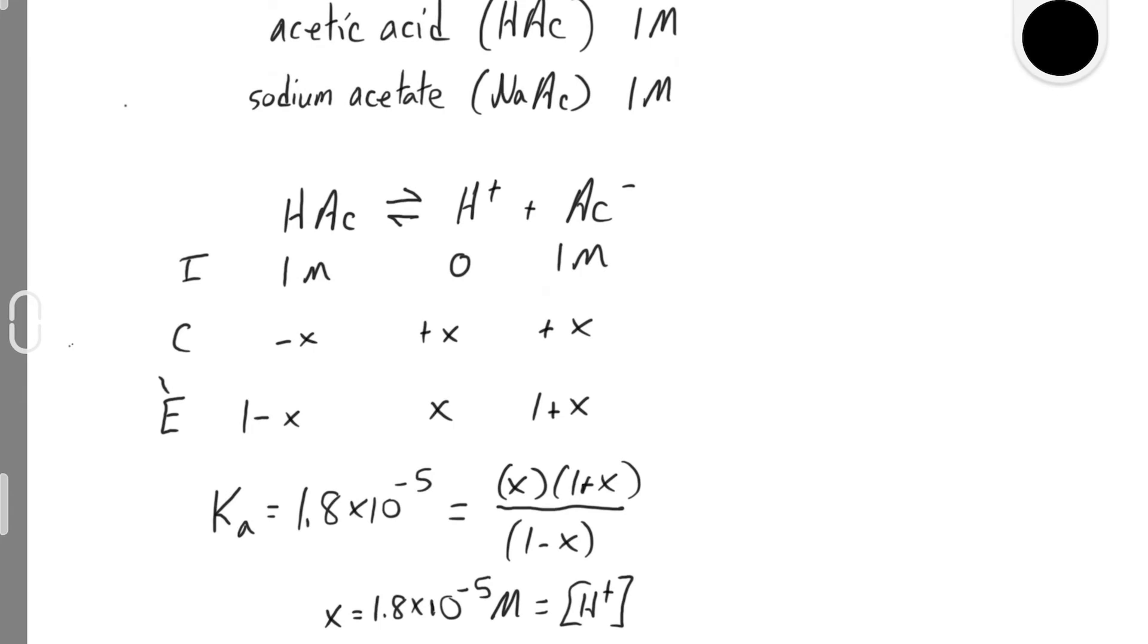When you have your H+ concentration, you can calculate the pH, and the pH is 4.74.